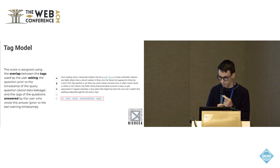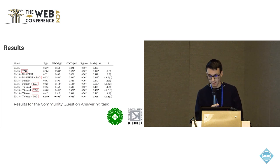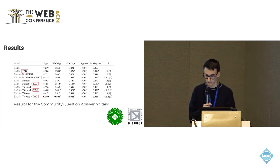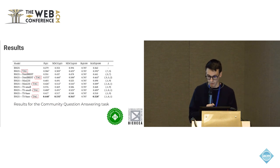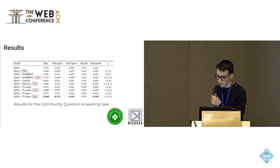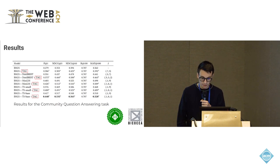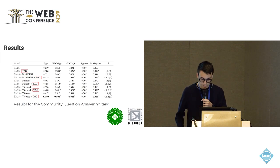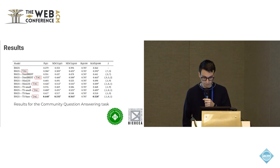The results show that applying the tag model achieves a statistically significant improvement over the non-personalized model, and this pattern holds for all models tested: BM25, DistilBERT, MiniLM, and T5. The best-performing model is T5-Base, followed by MiniLM — even though MiniLM was not fine-tuned on our dataset, it was trained on Stack Exchange and Stack Overflow data, giving it relevant domain knowledge.